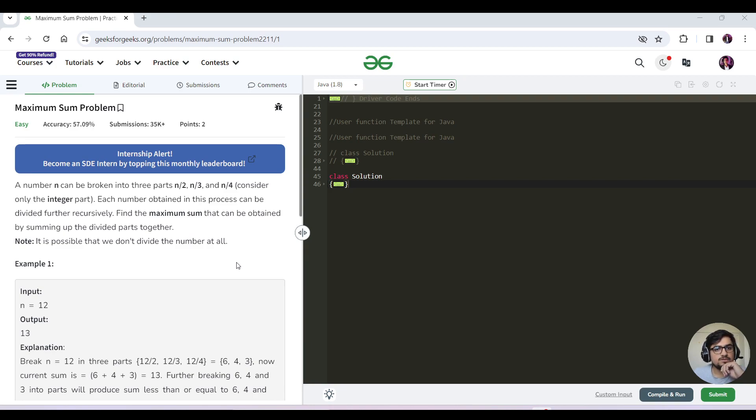Today's question is again a recursive problem. I think yesterday's question was also a recursive and DP problem. Let us read today's question. We have been given a number and we have to break it into three parts: n by 2, n by 3, and n by 4. Each number obtained is processed and divided further recursively. We need to get the maximum sum that can be obtained by sum of the divided parts together. There is also one note that it is possible that we do not divide the number at all.